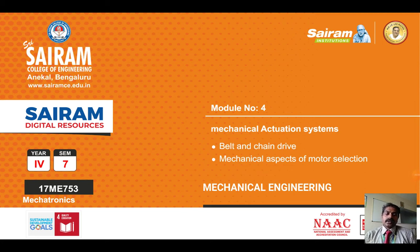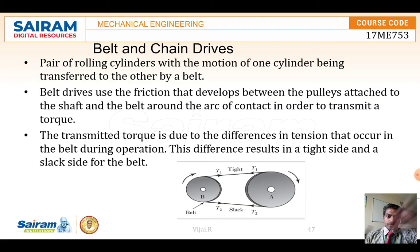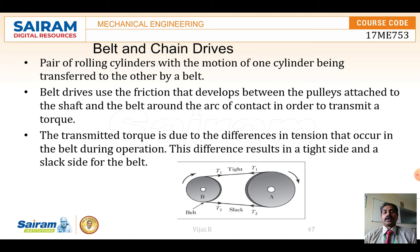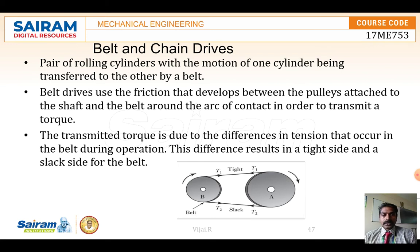In this video we are going to see mechanical actuation systems using belt and chain drives, and mechanical aspects of motor selection. A mechanical actuation system helps convert motion from one type to another — linear to rotary, rotary to linear, or any form of motion transformation. Mechanical components like cams, gears, and gear trains help transfer motion from one system to another.